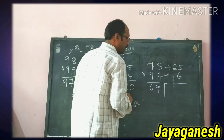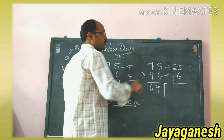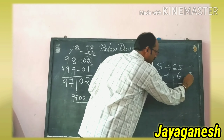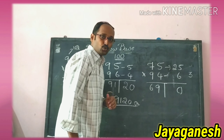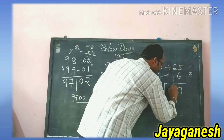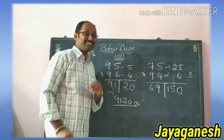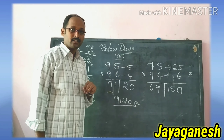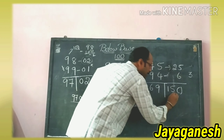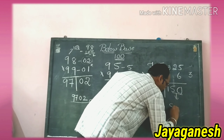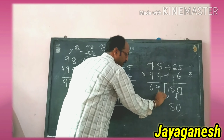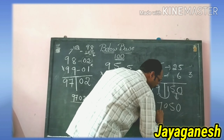Now multiply the differences: 25 by 6. 6 thirties are 180 — wait, 6 times 25: 6 by 30 gives 180, remainder 3; then 6 by 2 is 12, plus 3 is 15... arriving at 150. The right side has 3 digits so we drop 2 digits: keep 50 and carry 1, giving left side 69 plus 1 equals 70. The answer is 7050.